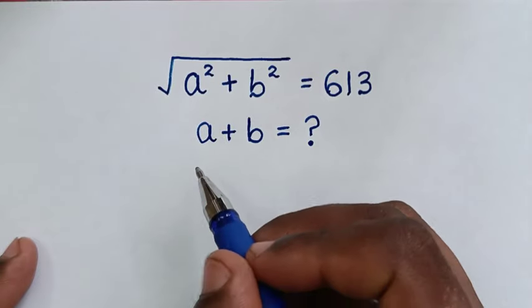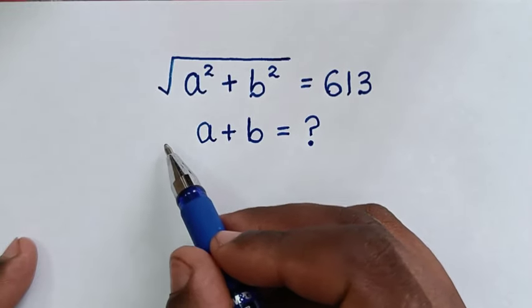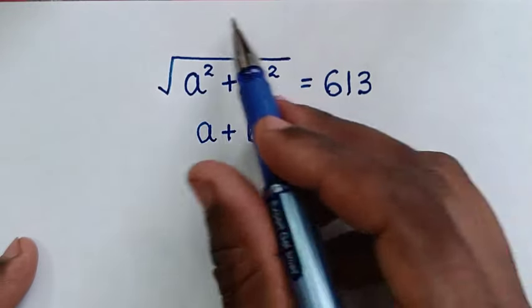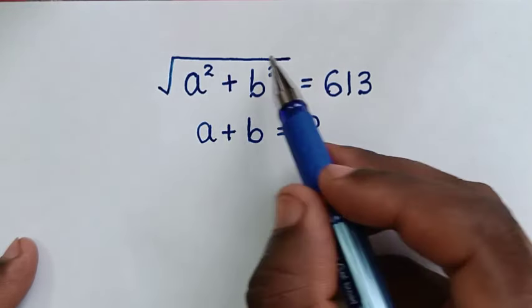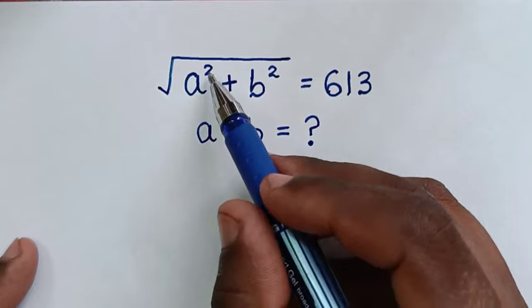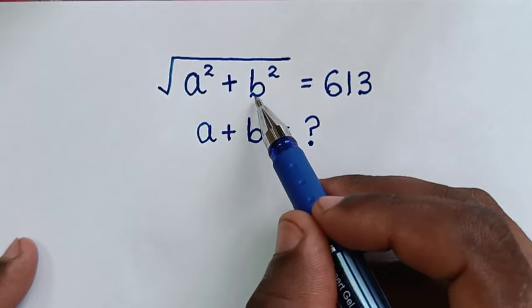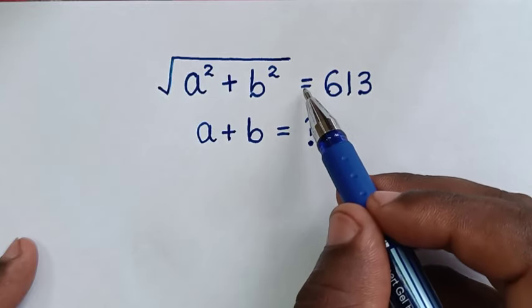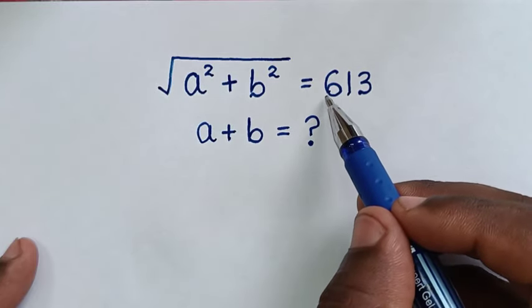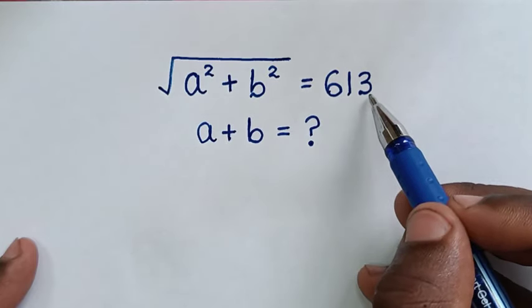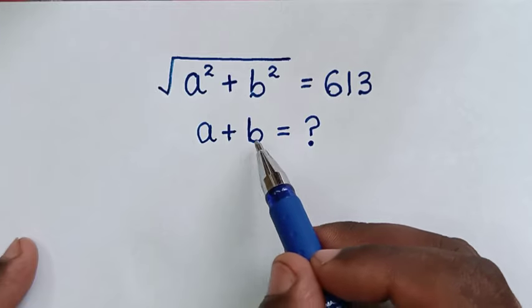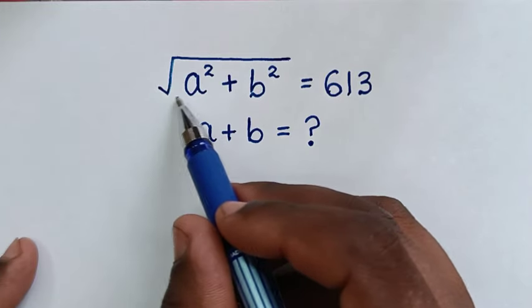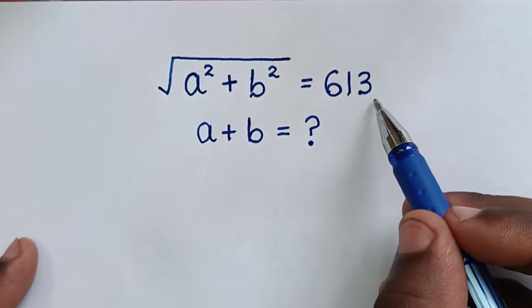Hello, you are welcome to solve this math problem: square root of (a squared plus b squared) is equal to 613. We need to find the value of a plus b from this equation.